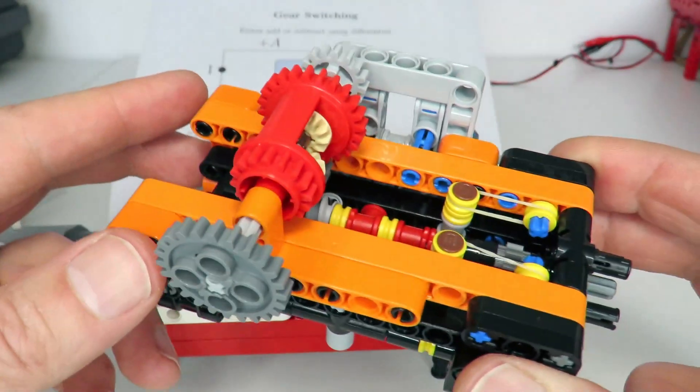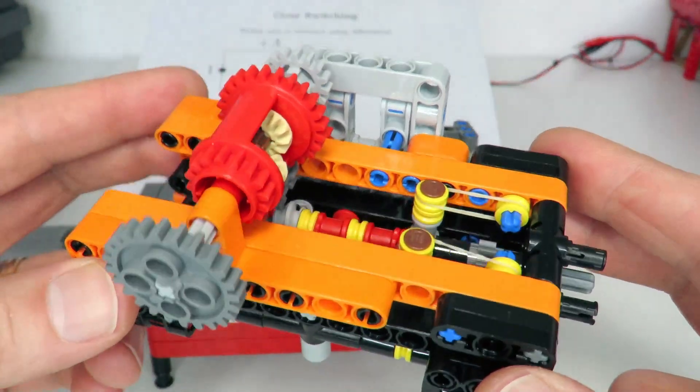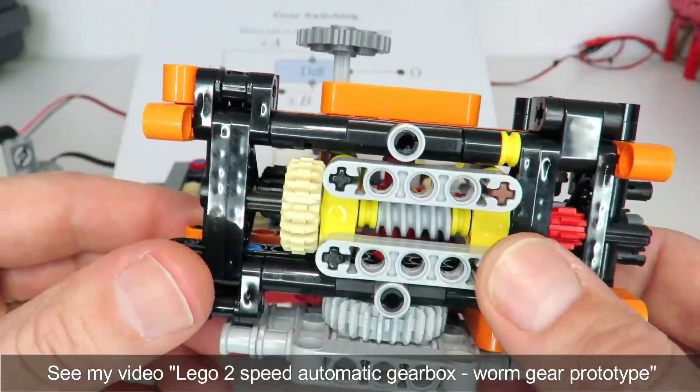To get around this problem I looked at some of my previous two-speed automatic gearbox designs and I found this one I did a while ago that uses a worm gear for torque detection.